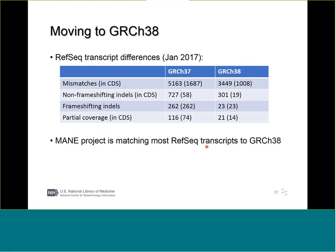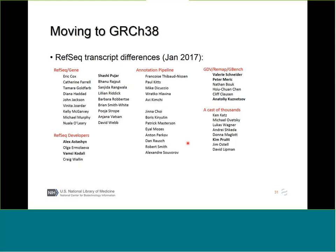To transition to talking about GRCh37 versus GRCh38: this data shows how RefSeq transcripts compare to the two genomes, matched to just the primary assembly of 37 and 38. There are still quite a few RefSeqs with some sequence differences versus GRCh38, but it's much less than GRCh37. In particular, there were a substantial number of frameshifts in 37 that have been corrected in 38, and some genes that were partial in 37, with just a few left in 38. So there's motivation to move on to GRCh38. These numbers will go down as we continue to work on the MANE project.